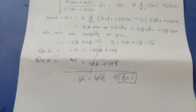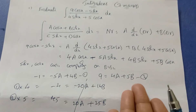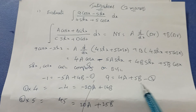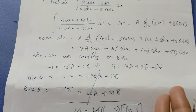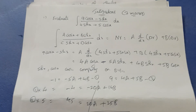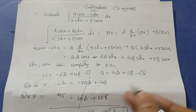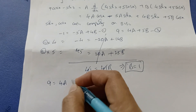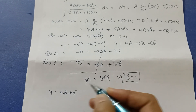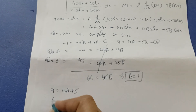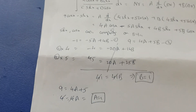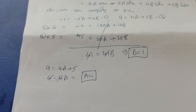Now that we have b, substitute into any equation to find a. Using the second equation: 9 equals 4a plus 5b, and since b equals 1, we get 9 equals 4a plus 5, so 4a equals 4, which gives a equals 1. So both a and b equal 1.